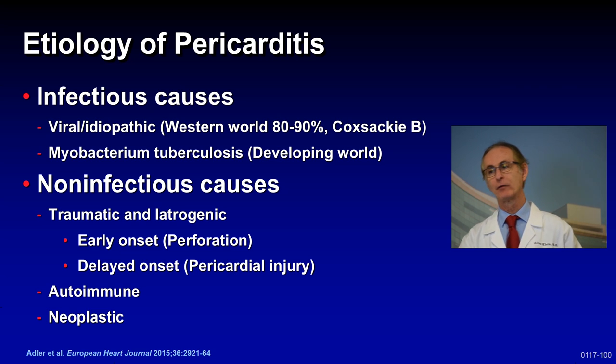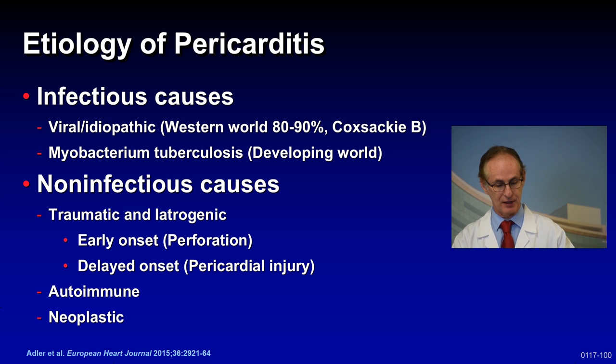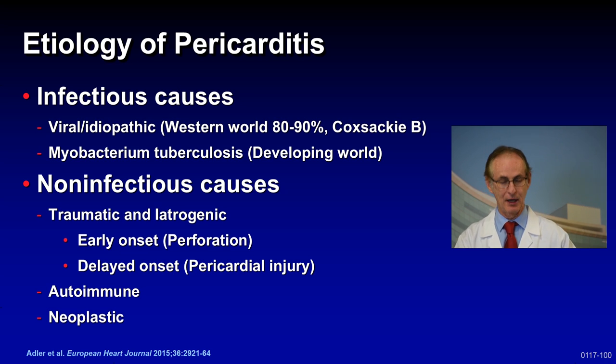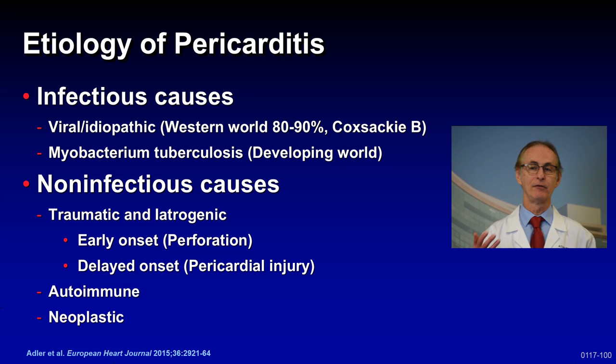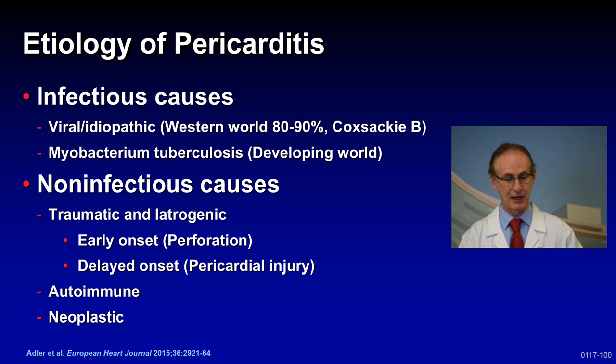We have to remember you can get autoimmune causes — for example, lupus or rheumatoid arthritis. And finally, a neoplastic cause is not uncommon.